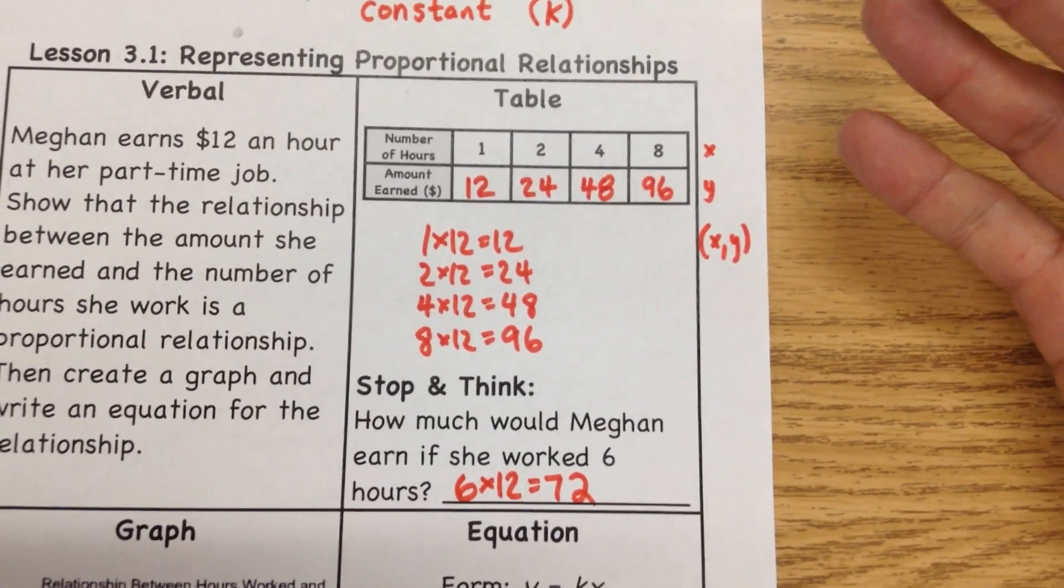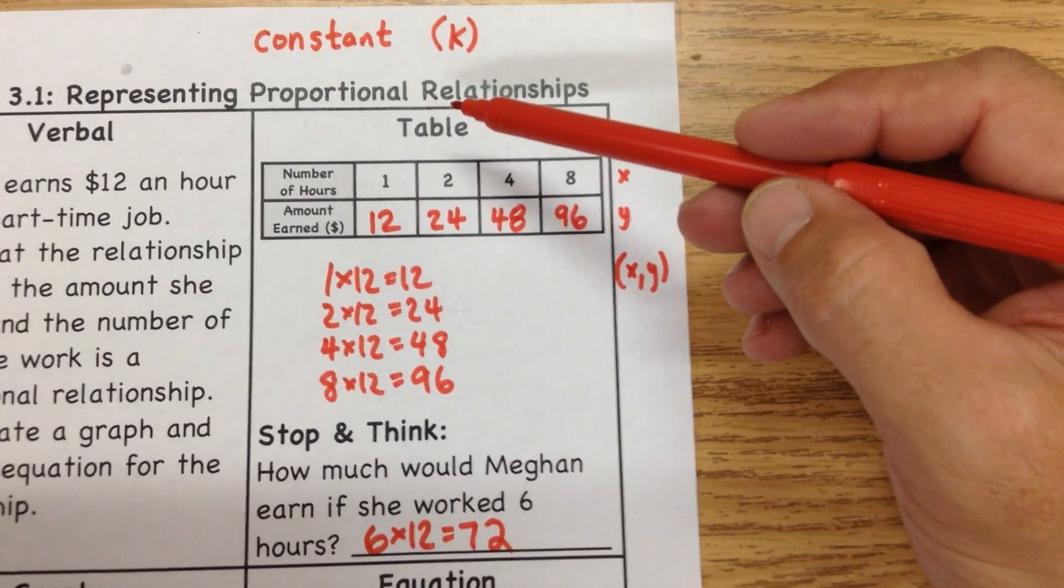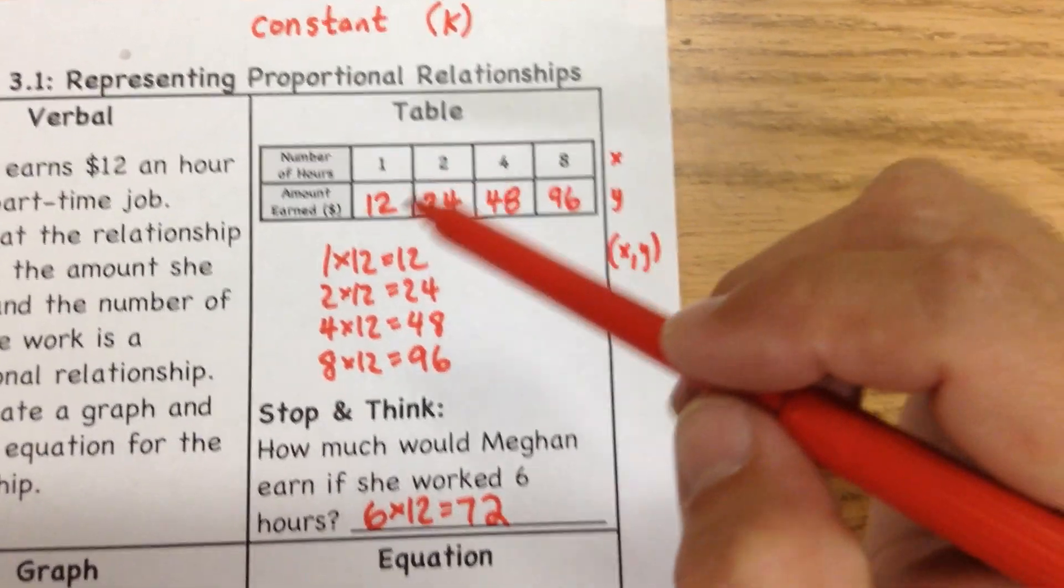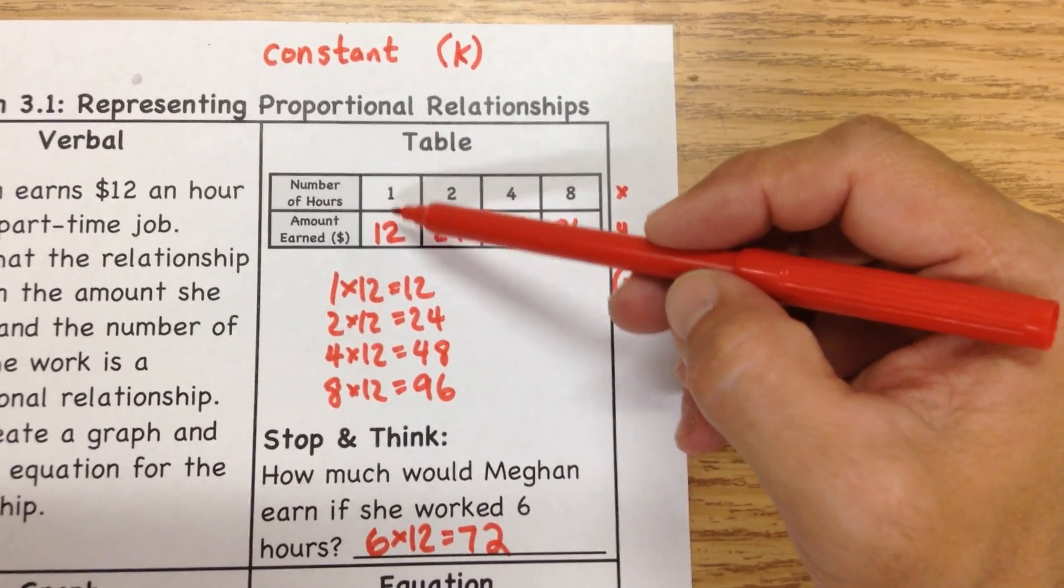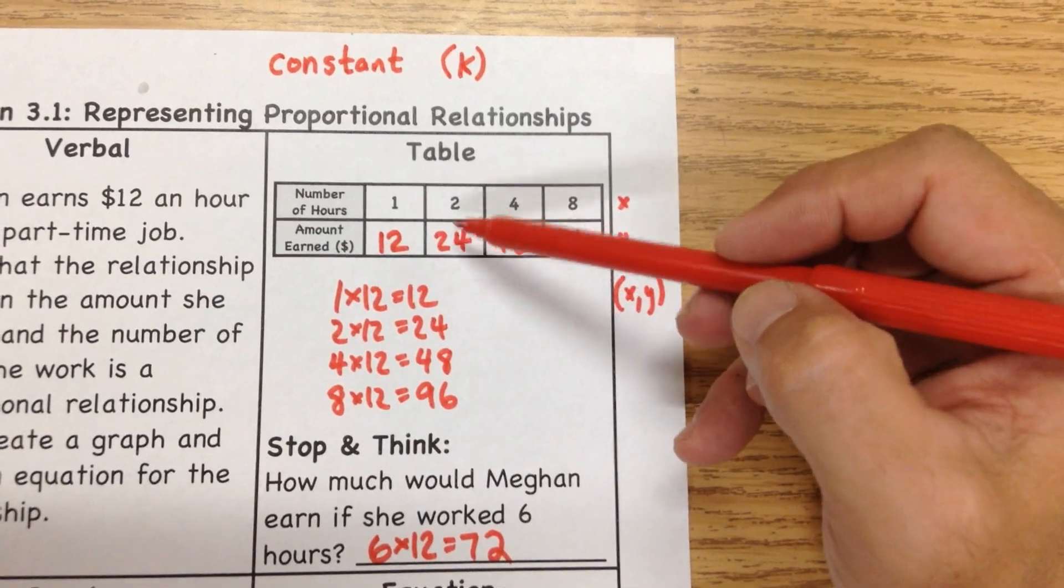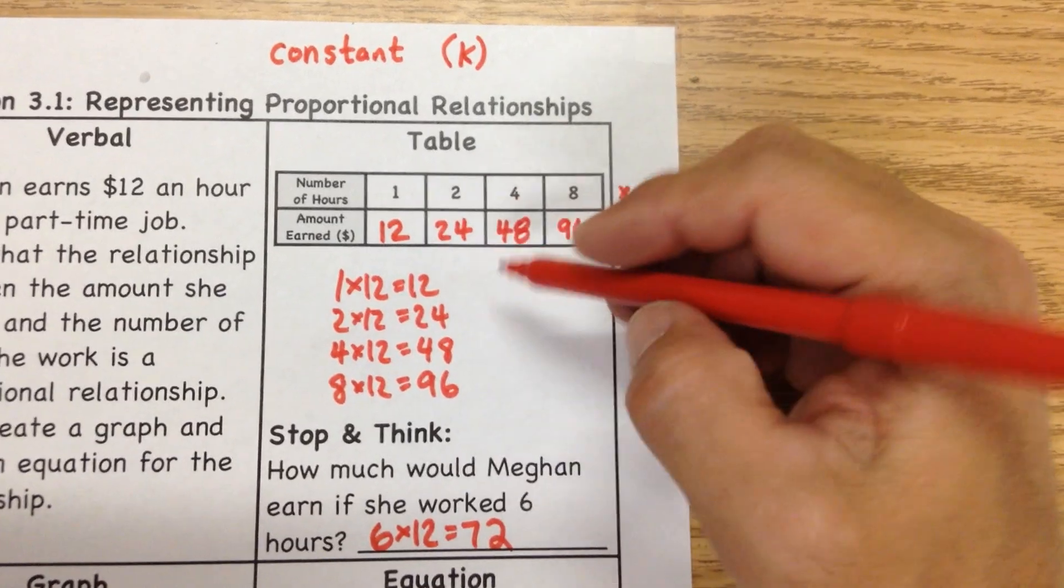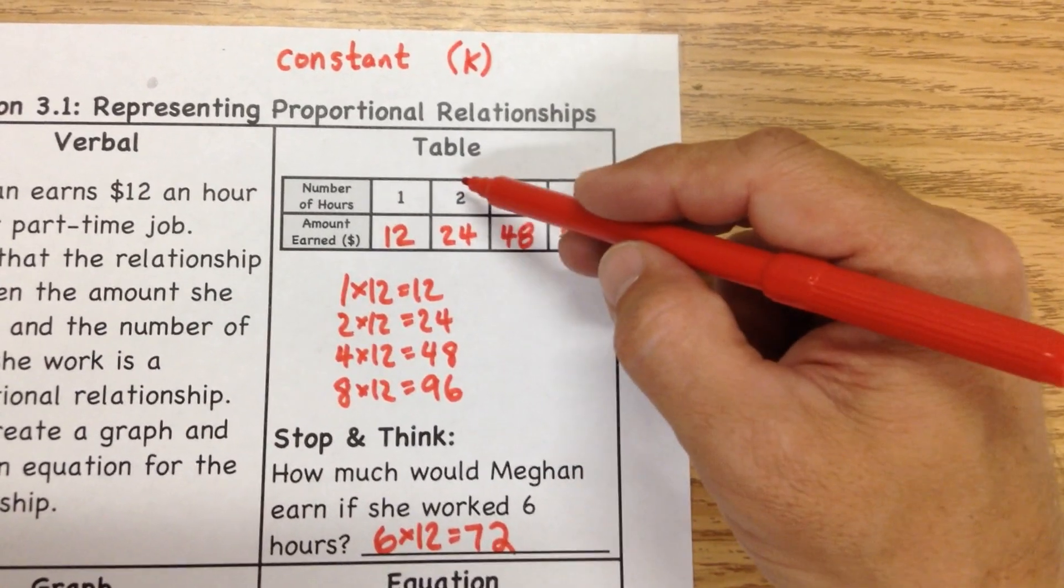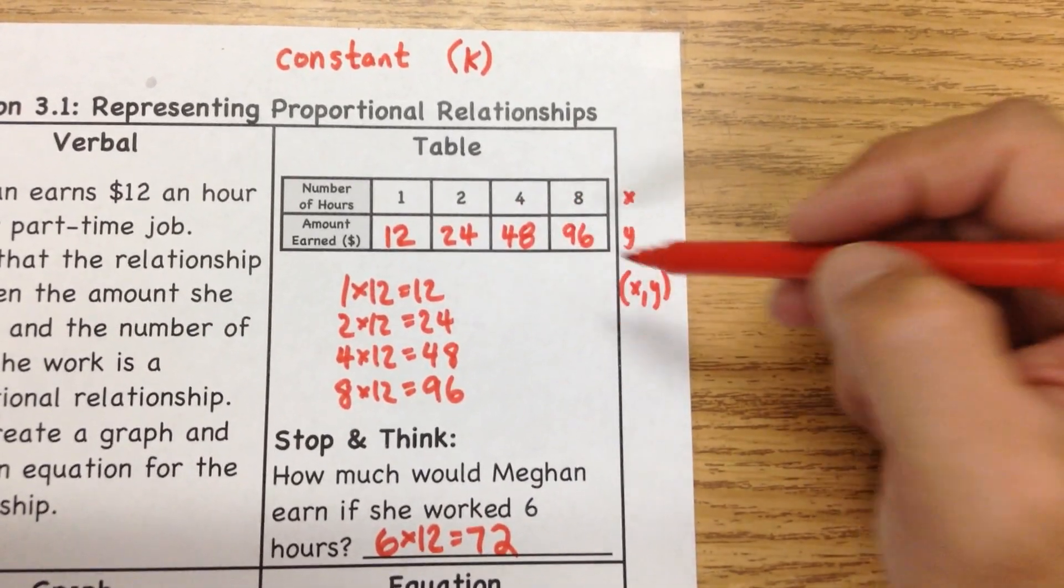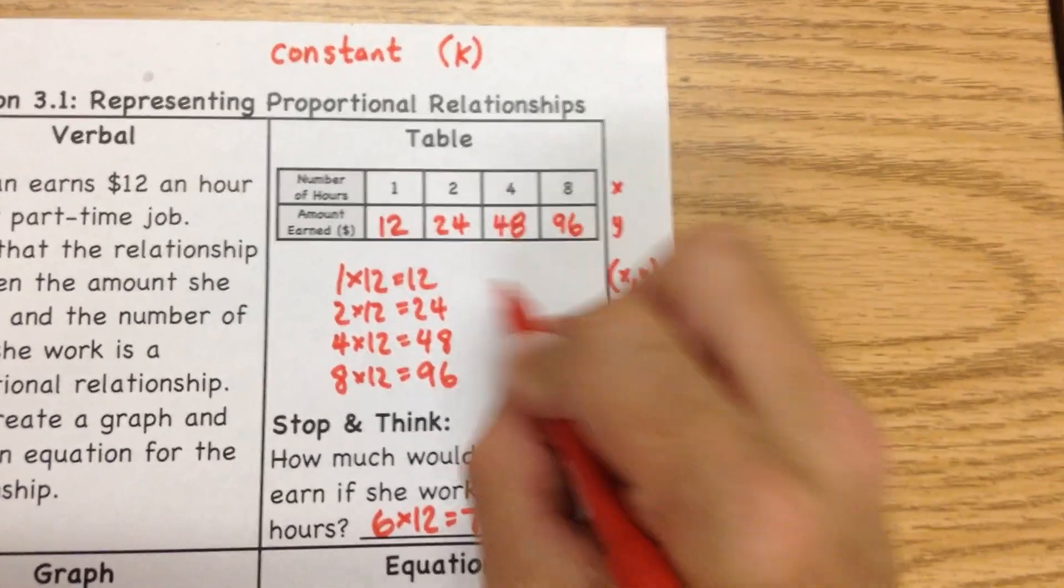Now, the issue with this is that a question like this that you might see may not start out giving you this information. It may only start out by giving you this table, and the numbers are filled in here, and then you have to figure out how much she makes in 6 hours, which means you would actually have to figure out she made $12 this hour, she made $12 each hour for these 2 hours. So you'd have to do a little dividing to find that the answer to the division problem here every time is 12. 12 divided by 1 is 12. 24 by 2 is 12. 48 by 4 is 12. 96 by 8 is 12.